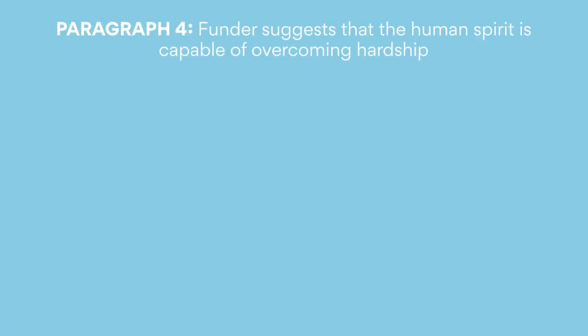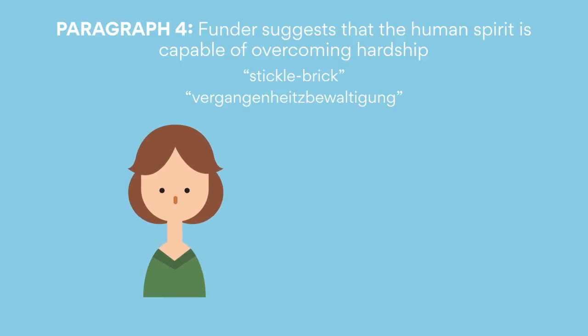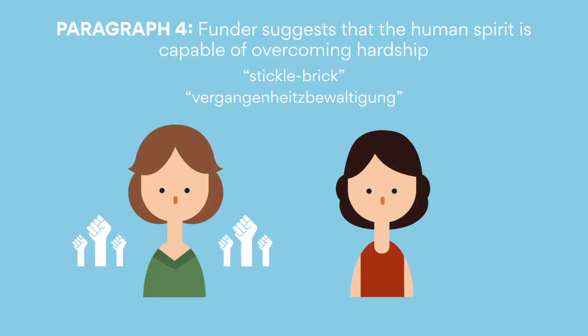Paragraph four: Funda suggests that the human spirit is capable of overcoming hardship. She tells a slightly more optimistic tale in Stasieland. Many of her characters who have experienced hardships under the GDR have developed their own coping mechanisms to deal with the past. She actually foreshadows this at the start of the book, where she talks about Vergangenheitsbewältigung — meaning 'manner of dealing with the past.' We see this idea being developed and realized towards the end of the book. By 2000, the victims she had interviewed have developed new lives for themselves. Julia, for instance, has left Germany behind for America, and we hear that she's participating in Reclaim the Night Marches, thereby converting the traumas of her past into social action for the future. Funda also admires Miriam's ability to cope, portraying her as an angel in her white and light and comfortable new home. She opens and closes the book with her story because she has quietly overcome the most.